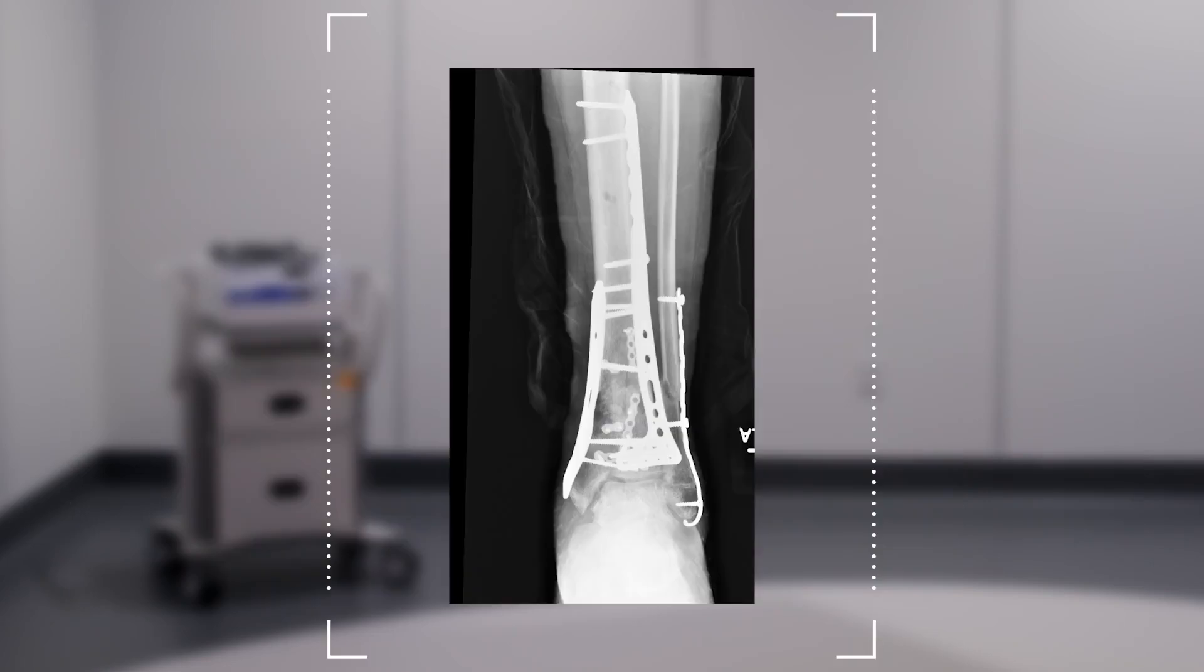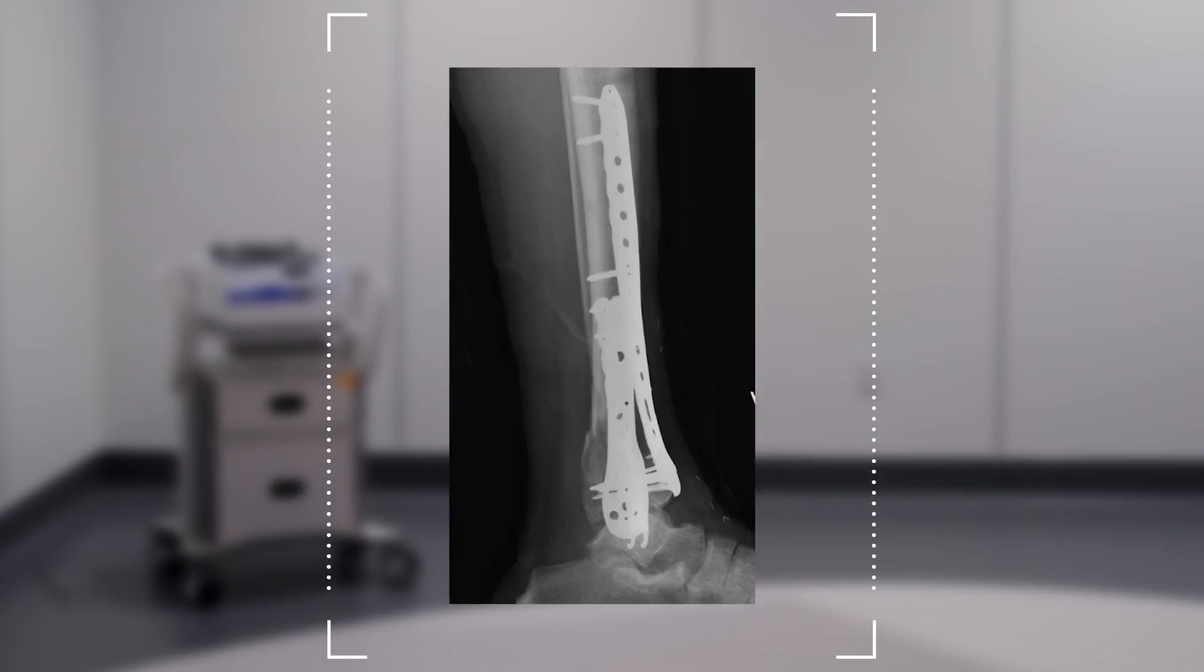At two-year follow-up, you can see maintenance of the talus centered in the distal tibia, maintenance of the articular reduction, and maintenance of that compressed distal articular surface was so critical to support the talus for the best potential long-term outcome for this patient.